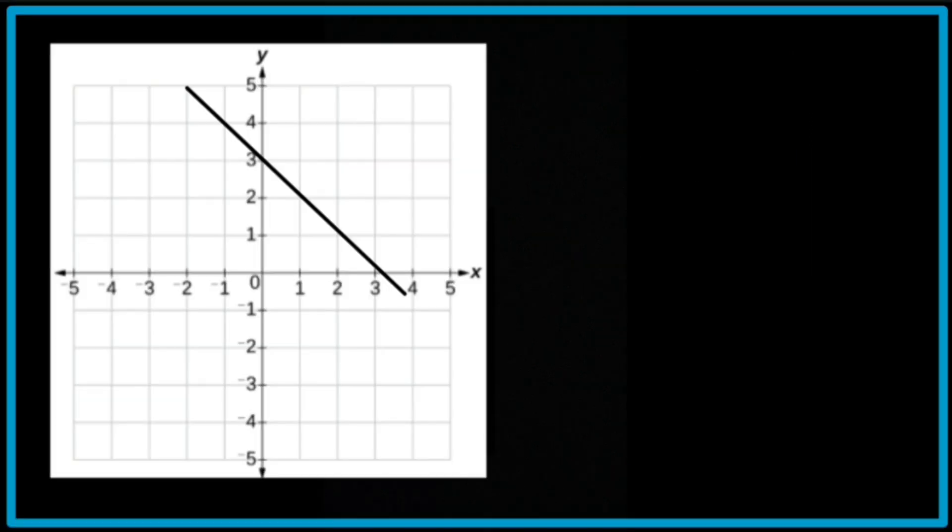Moving on to negative gradients now. So y equals, it's going to be something negative. So it's going to be negative mx plus 3. As you can see, the line cuts through the y-axis at a positive 3. Because it's slanting the opposite way, it's going to be negative gradient.